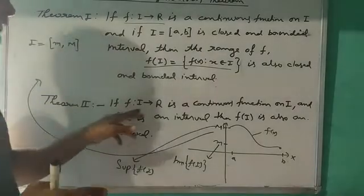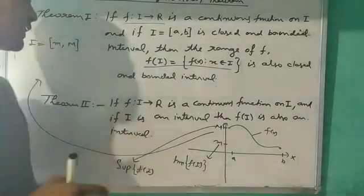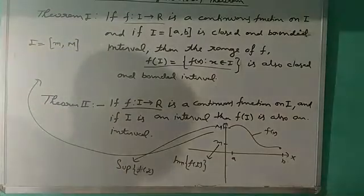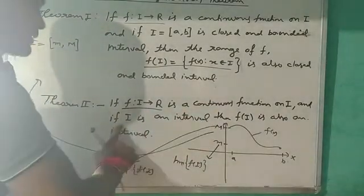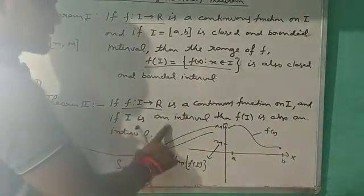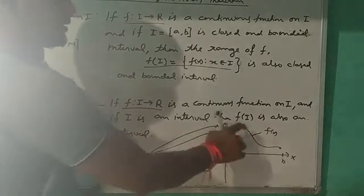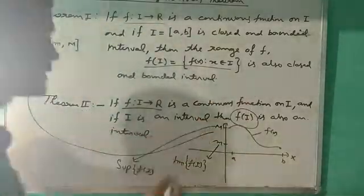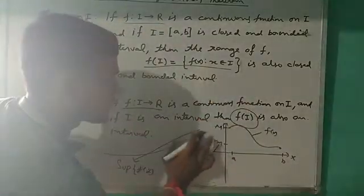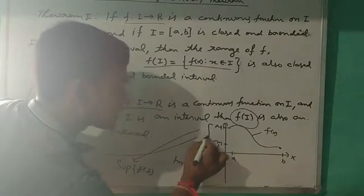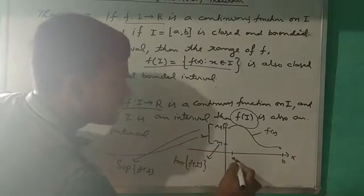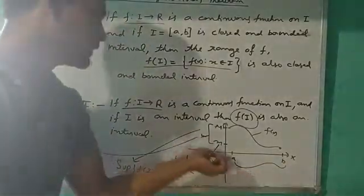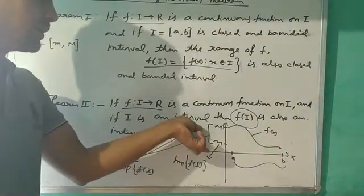Second: if f is such that f: I → R is a continuous function on I, and I is an interval, then the range is also an interval. If the input set I is an interval, then this range is also an interval.